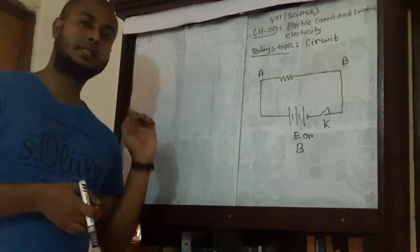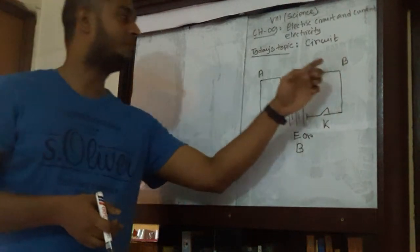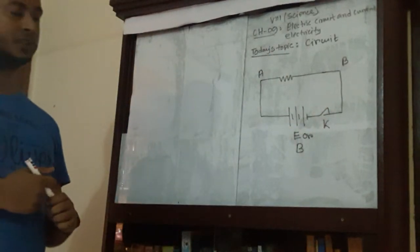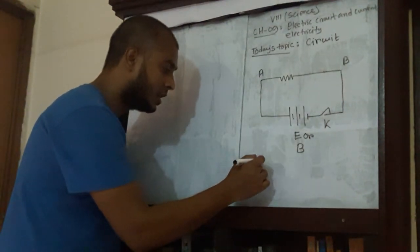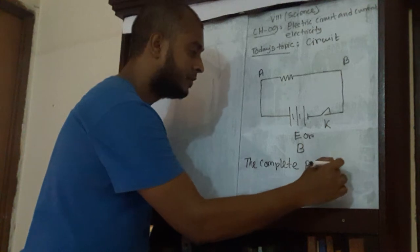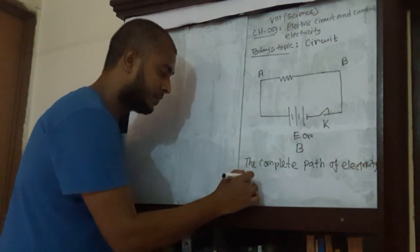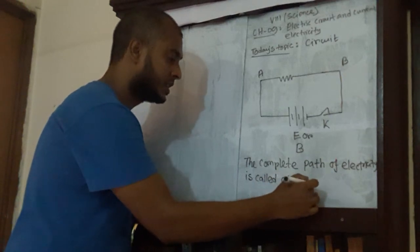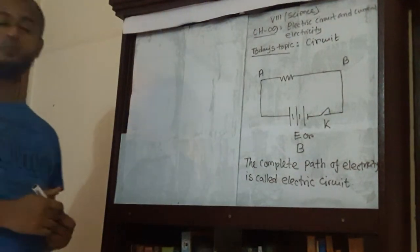So, electric circuit is nothing but the complete path of electricity. The complete path of electricity. The definition of circuit is: the complete path of electricity is called an electric circuit. So, electric circuit means the complete path of electricity.